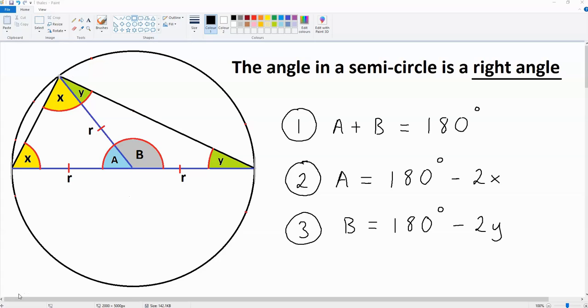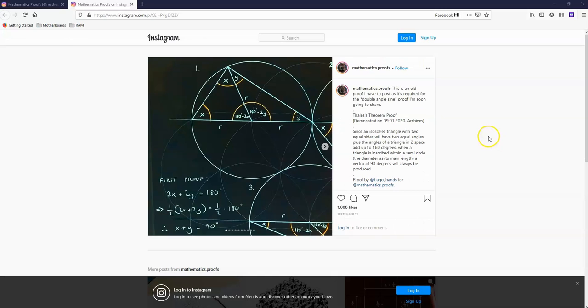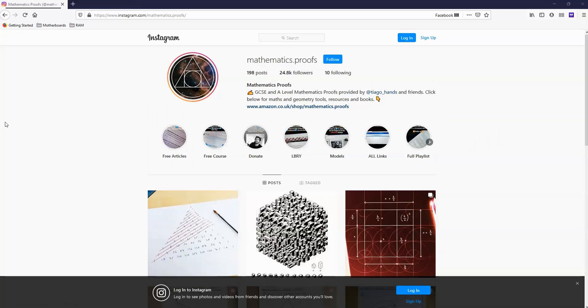This circle theorem can be found in Further Pure Mathematics 2, Further Complex Numbers. If this video has been useful to you, do not forget to subscribe to my YouTube channel if you haven't already done so. Also, I'd recommend you visit mathematics.proofs on Instagram for more GCSE and A-level mathematics proofs. Thank you very much indeed for watching this video and I'll talk to you again soon.